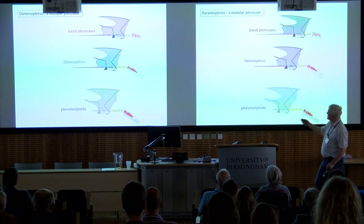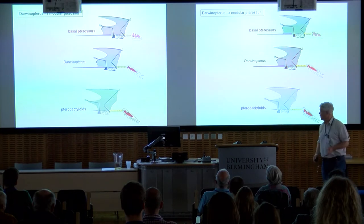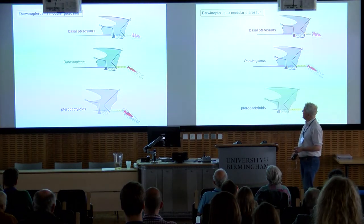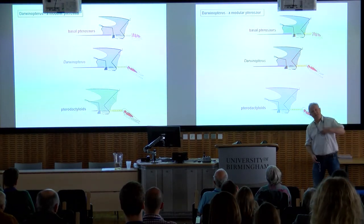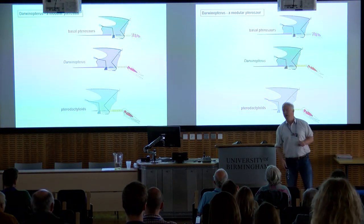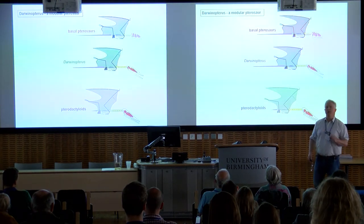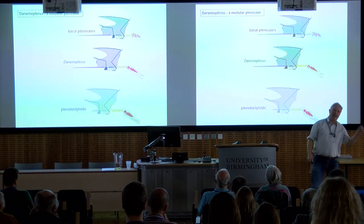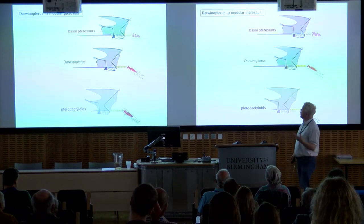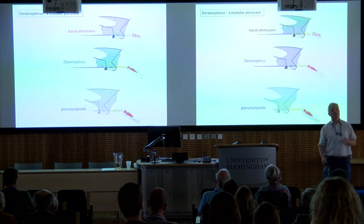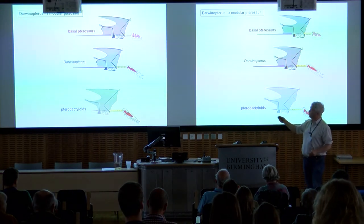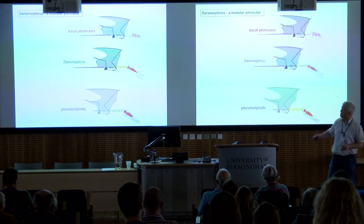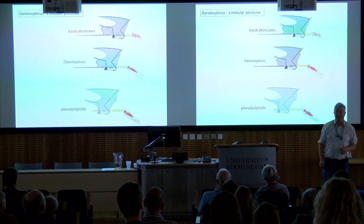The interesting thing about Darwinopterus is that the skull and the neck are identical to those of pterodactyloids, whereas the rest of the postcranial skeleton is virtually identical to that of basal pterosaurs. So this tells us something very important about timing: the skull and the neck evolved first, the rest of the skeleton caught up later on. The problem is that there are no real intermediate characters in Darwinopterus — you either had pterodactyloid characters or basal pterosaur characters. What we really needed were forms intermediate between basal pterosaurs and Darwinopterus, or between Darwinopterus and pterodactyloids — ideally both.